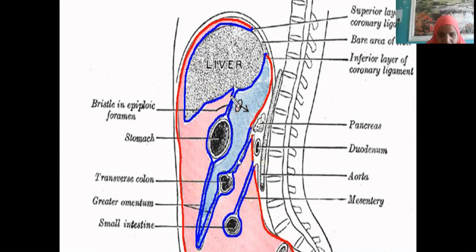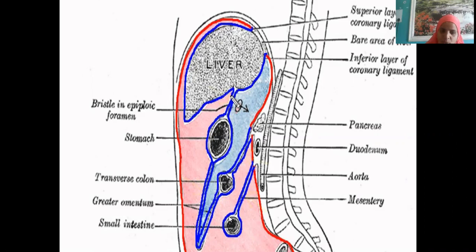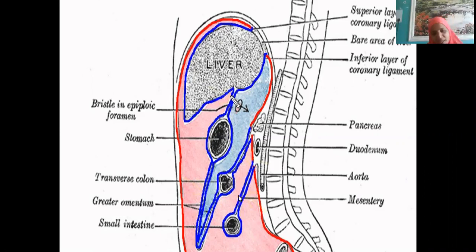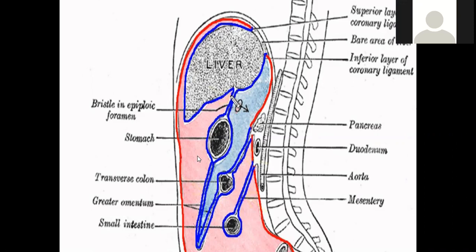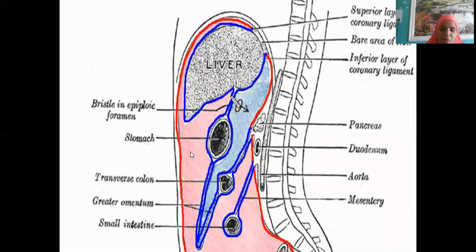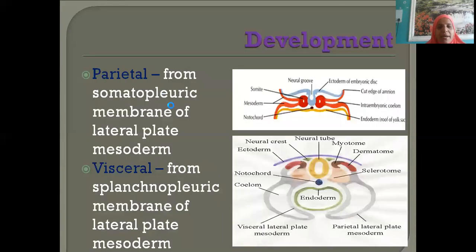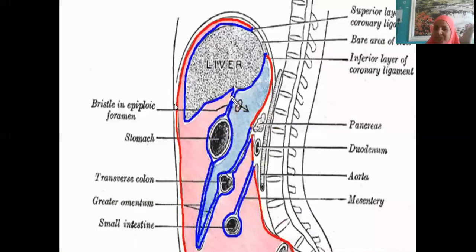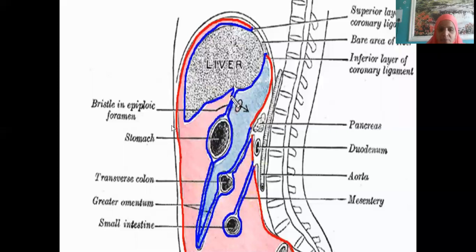From the transverse colon, the peritoneal fold is the transverse mesocolon. The peritoneum continues to enclose the small intestines — that fold is the mesentery. The pinkish area between the parietal and visceral peritoneum is called the peritoneal cavity. The parietal peritoneum is derived from the somatopleuric layer of the lateral plate mesoderm — whenever the somatic word is used, it is pain sensitive.